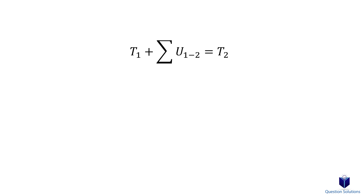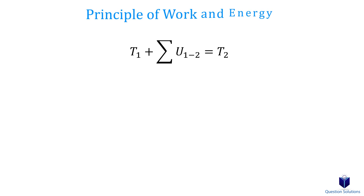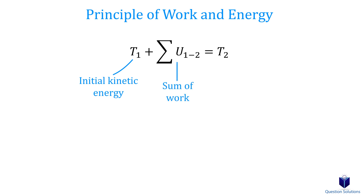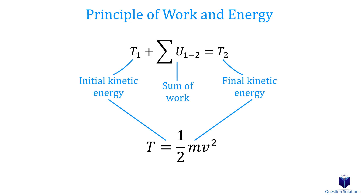Now that we have work covered, we can look at the big equation: T1 plus sigma U equals T2. This is called the principle of work and energy. T1 represents the initial kinetic energy of a particle, sigma U represents all the work added together, and T2 represents the final kinetic energy. Kinetic energy is half times the mass times the velocity squared. In other words, the initial kinetic energy plus the work done equals the final kinetic energy.